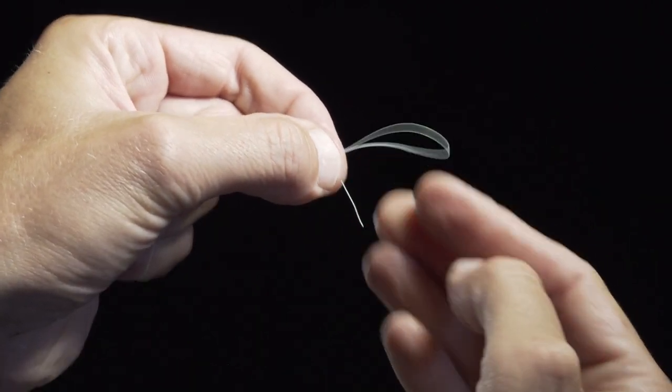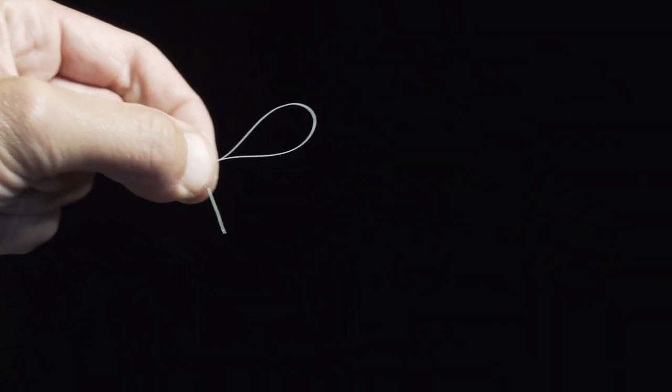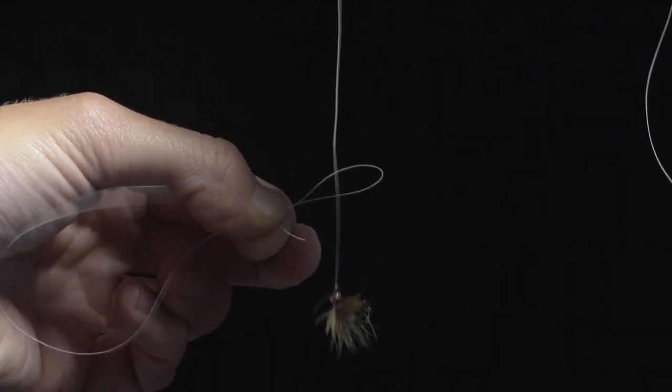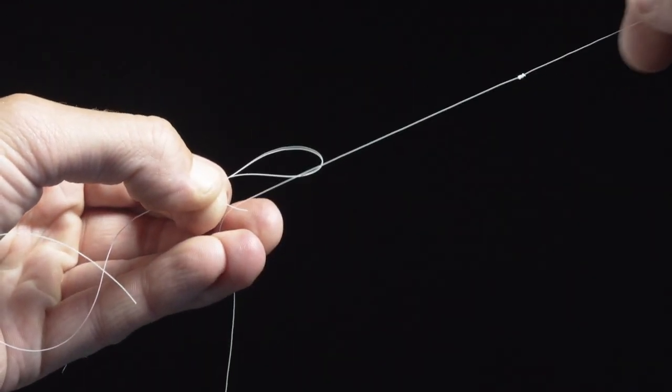Pinch the base of that tippet, keeping that loop nice and large. Pass your existing rig through the loop above the stopper knot.